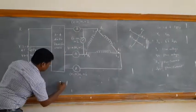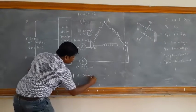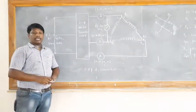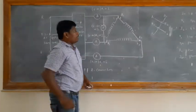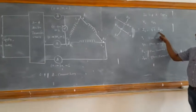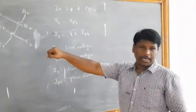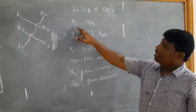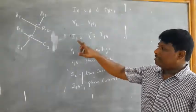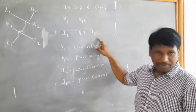Today we will discuss the three-phase delta connection. In the case of delta connection, the relation between line voltage and phase voltage, and similarly the relation between line current and phase current. In the case of three-phase delta connection, using the vector diagram, the line voltage and phase voltage are equal in value, and the line current equals root three times the phase current.